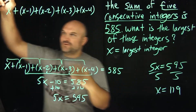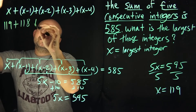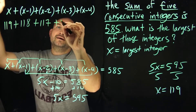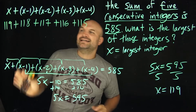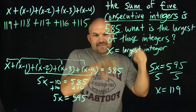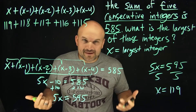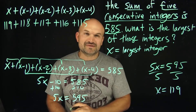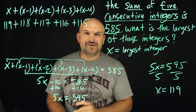Just in case we want to know the other integers: we'd have 119, 118, 117, 116, and 115. We could easily verify by adding these all up to make sure they equal 585. But in all seriousness, if this video was helpful for you and you gained some value, you're going to love the next video I have for you.